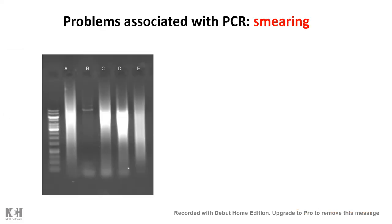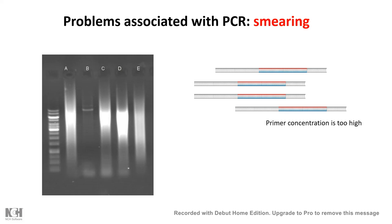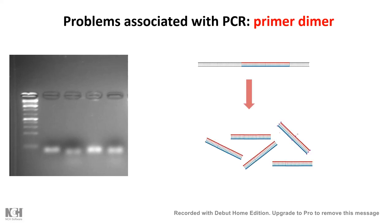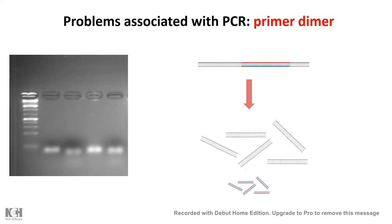There could also be a problem with template concentration — if the template concentration is too high, it can cause smearing. Another problem is primer dimers: if the primers are too self-complementary, instead of annealing with the DNA template they anneal with each other, so instead of amplifying the gene region of interest, only primer dimers form. These are several problems associated with PCR, but with optimization, multiple adjustments, and proper primer design, all these problems can be solved.